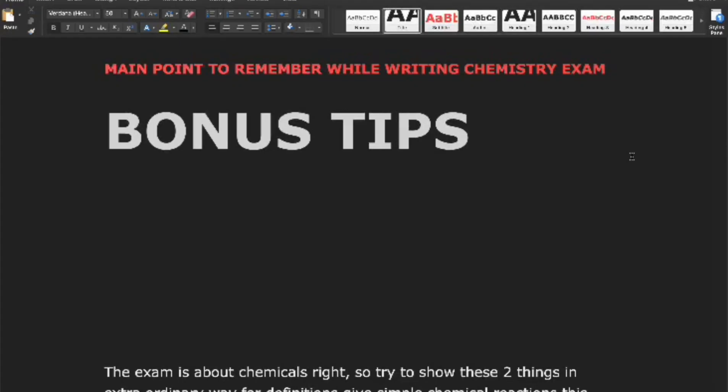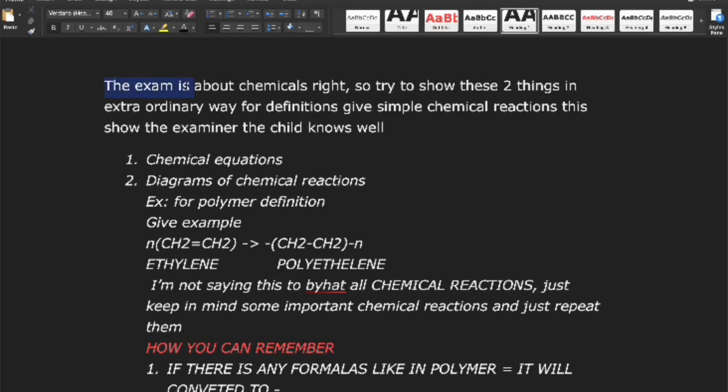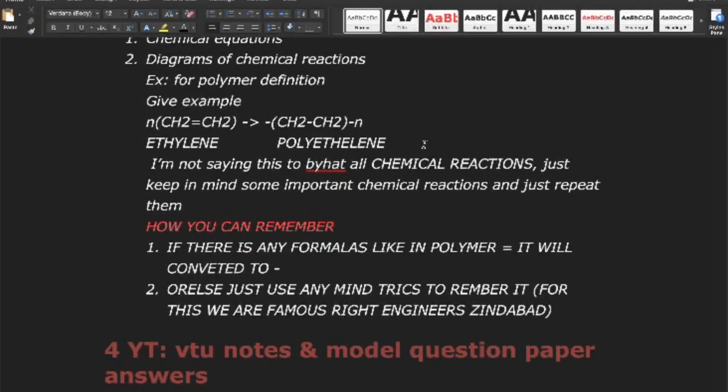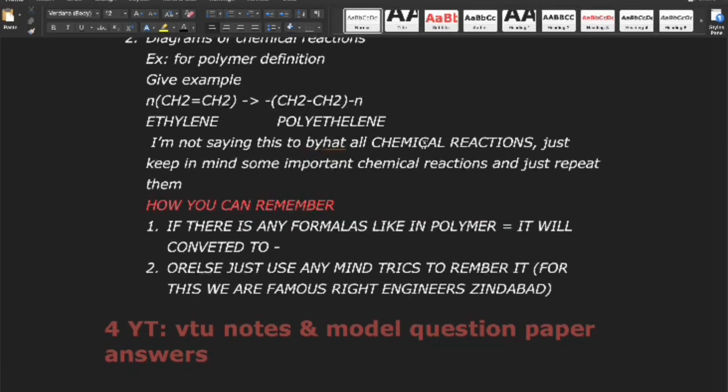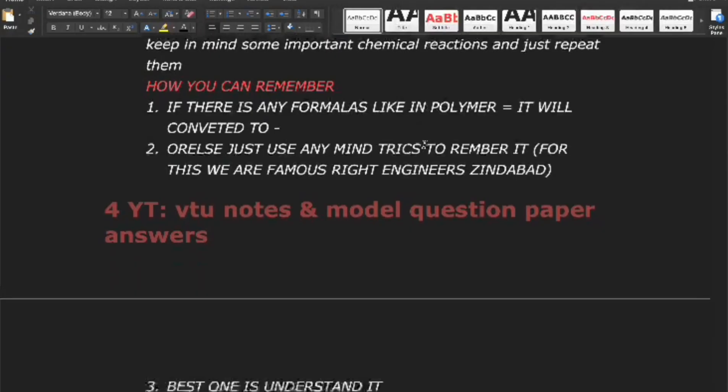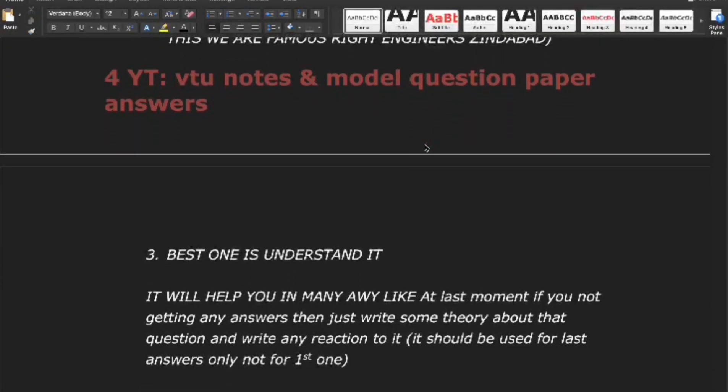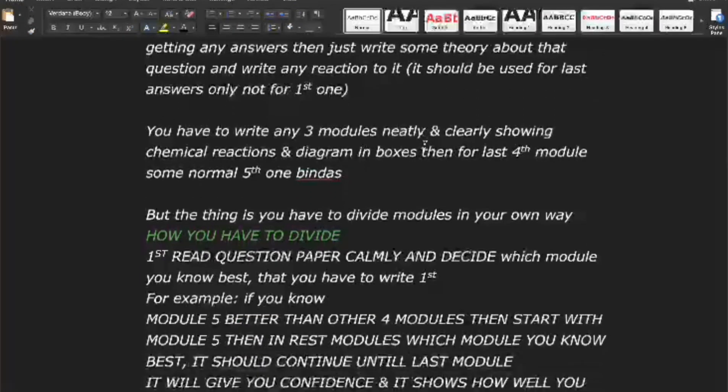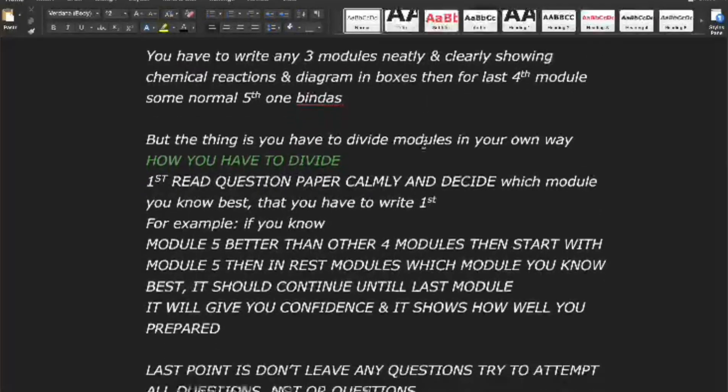Main points to remember for chemistry exam. Bonus Tips: Since the exam is about chemicals, present things in an extraordinary way. 1. Chemical Equations: Include simple chemical reactions for definitions to show your understanding. Example for polymer definition, give simple reaction as example. 2. Diagrams of chemical reactions: Draw neat and label diagrams wherever possible. Note, you don't need to memorize all chemical reactions. Just remember key ones and repeat them when necessary.